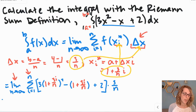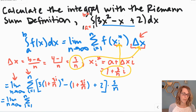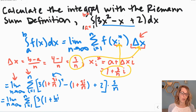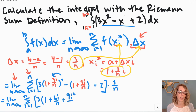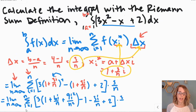Let's go ahead and expand. The limit as n goes to infinity of the summation from i equals 1 to n. I'm going to carefully FOIL the squared term: 1 plus 3i over n squared gives 1 plus 6i over n plus 9i squared over n squared. Then distributing the negative: minus 1 minus 3i over n. Plus 2, all times 3 over n. Let me grab this and put it on a blank sheet to continue.